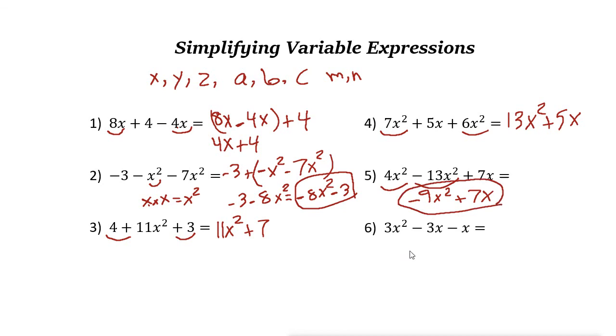Last one here. The like terms are these two. So the final answer, we can combine these. So it is 3x². We cannot combine it with anything else. Minus, so -3x - x is -4x.